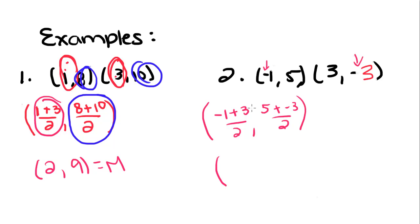Negative 1 plus 3 is positive 2 divided by 2, and when we add a negative, we're really subtracting a positive. So 5 minus positive 3 is 2 over 2, and if you reduce those, you get 1 and 1.